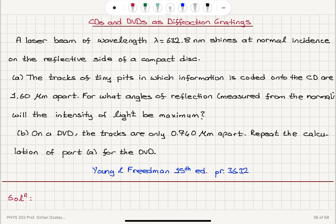Okay, so we're looking at the CDs and DVDs as diffraction gratings. We note the tracks of tiny pits in which information is encoded are 1.6 micrometers apart on a CD.